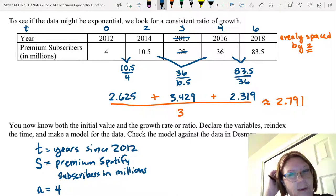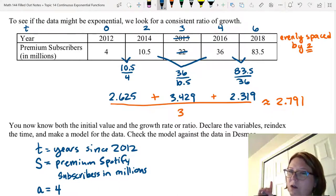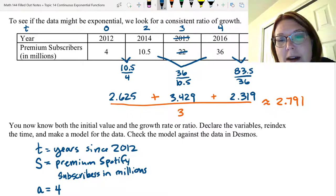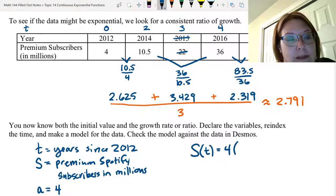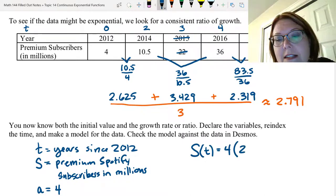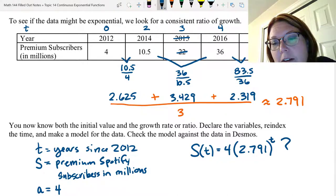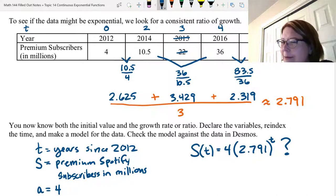And we have something like a growth factor, 2.791, but that's over two years. And so we're going to play around with that a little bit and see if we can't figure out how to get that to fit the data properly. If you're not paying close attention, you might start with the model capital S of t equals four times left parentheses 2.791 right parentheses to the t. And I'm going to put a question mark next to this because it doesn't seem like it should be that easy if this is a growth rate for two years instead of one year.